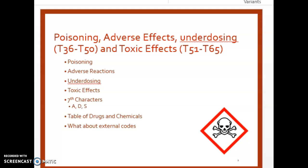If you see any of those terms in the documentation, you'll be in the fifth column — adverse effects. Underdosing again is when the patient didn't take enough of the medication or stopped prior to completing the prescription. When coding poisoning, adverse effect, or toxic effect, we would also have an external cause code to show how that happened. We will cover external cause codes in the next lecture. Now let's do a coding practice.